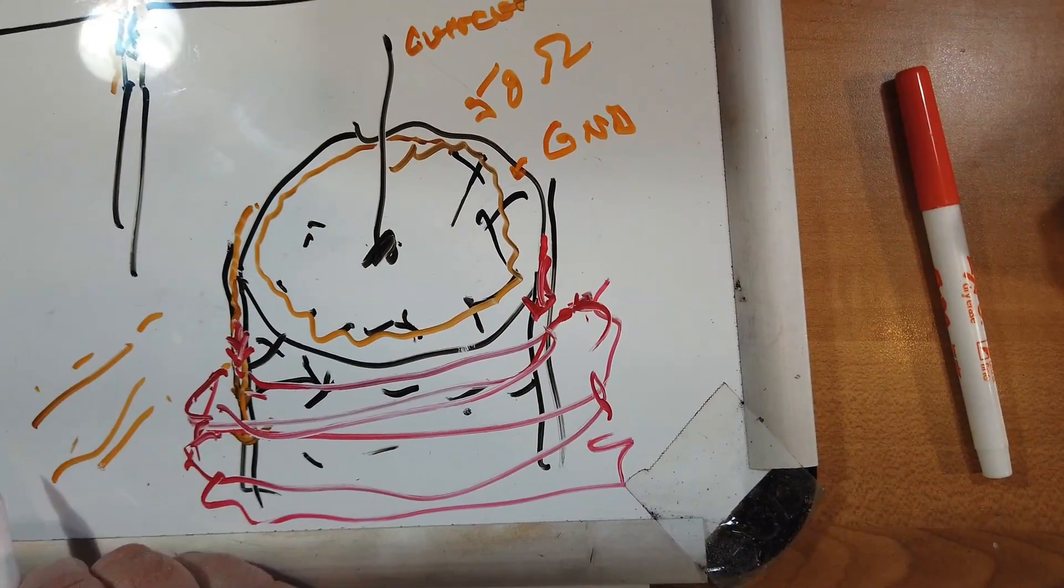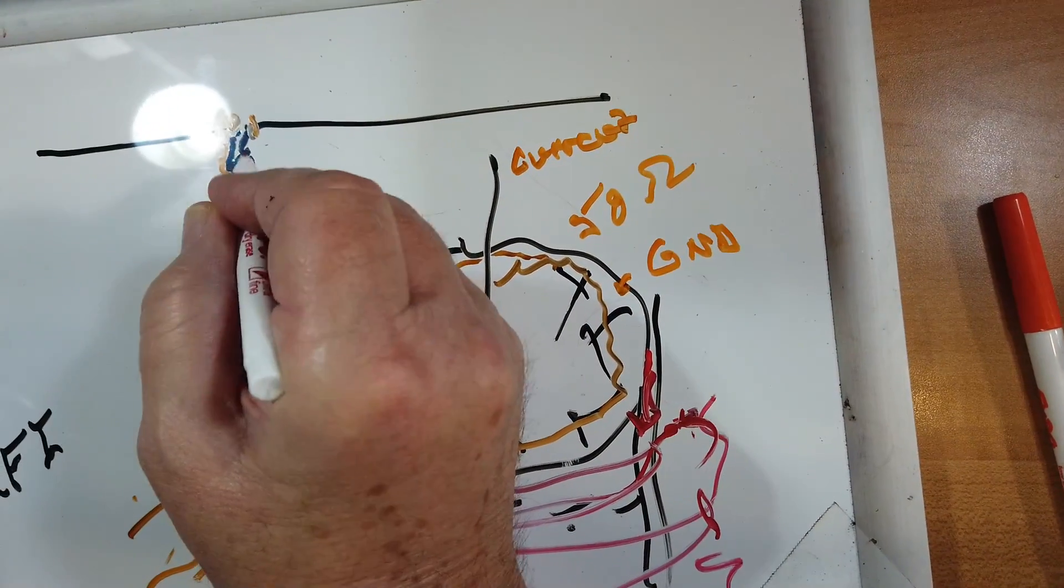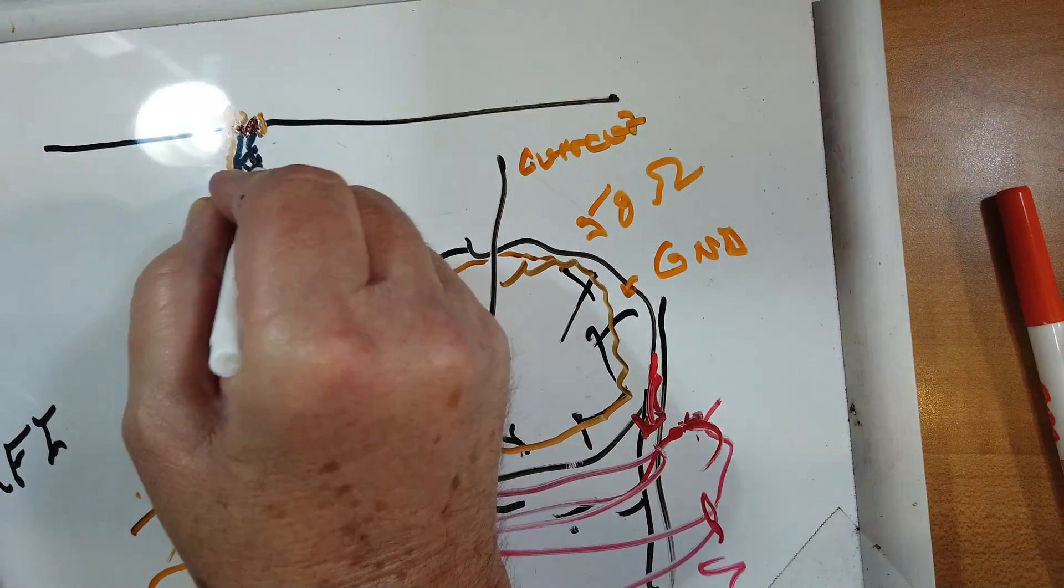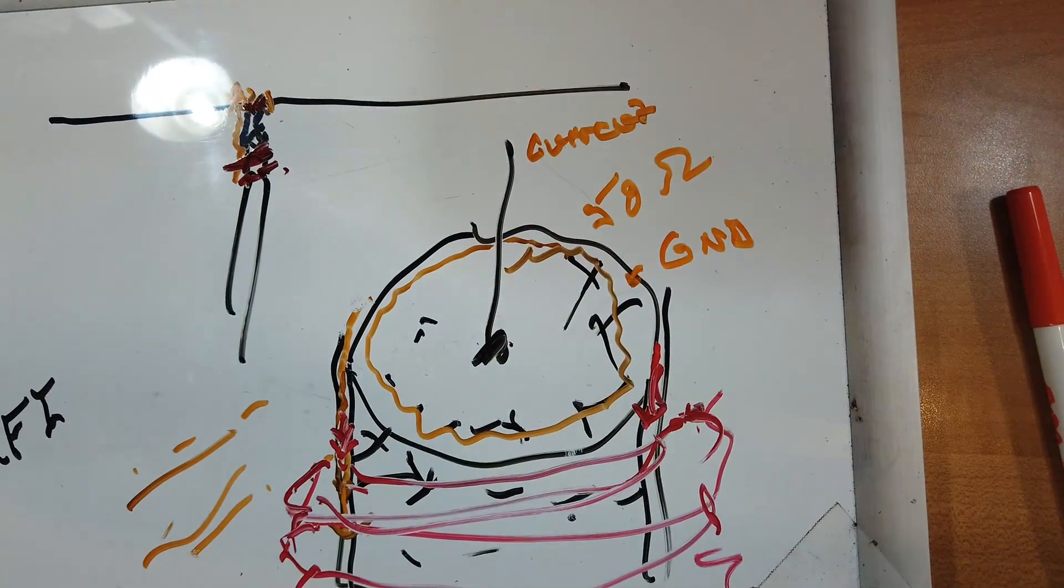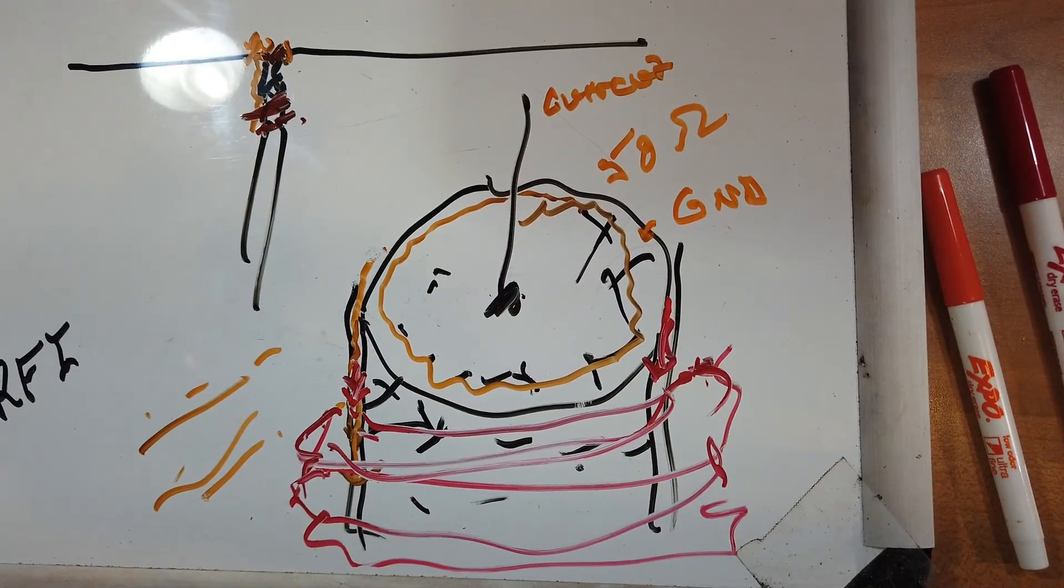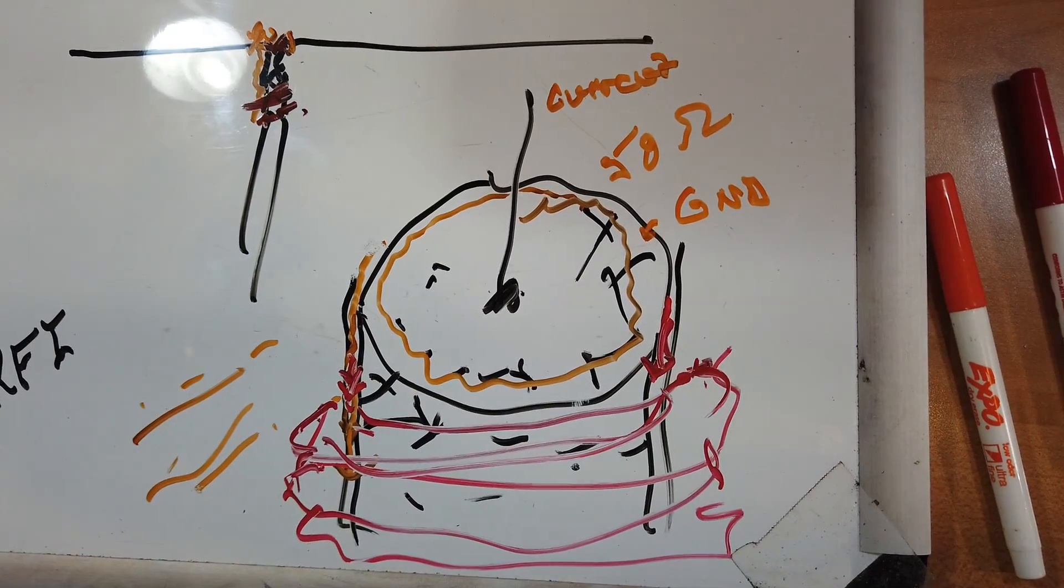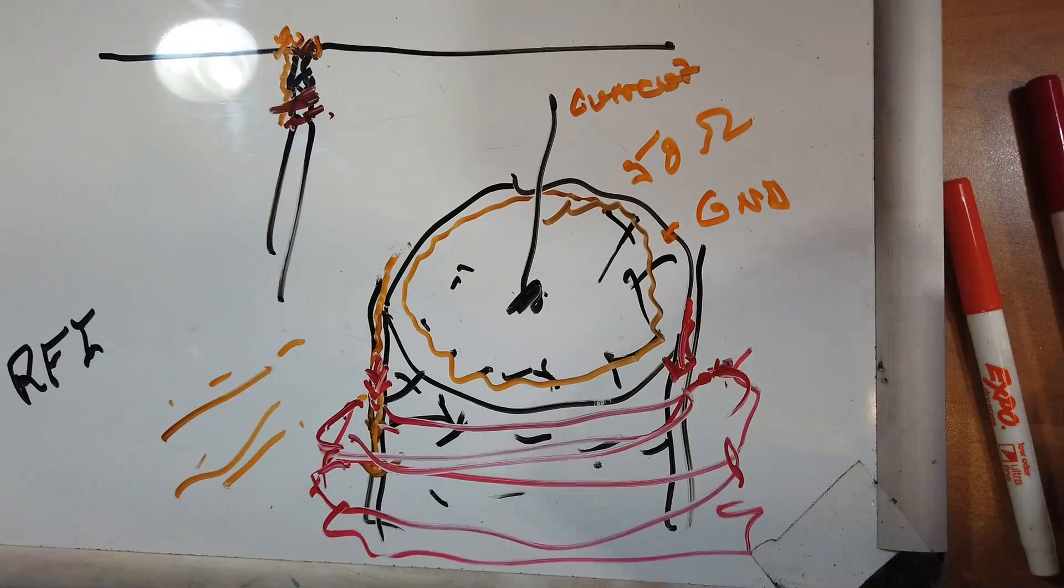And so this has the function of converting unbalanced to balanced by means of those chokes. There's no voltage ratio or impedance ratio, or I guess you would say it's one to one. But it's a commonly used method.